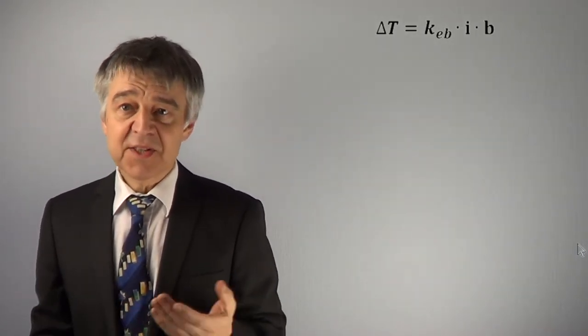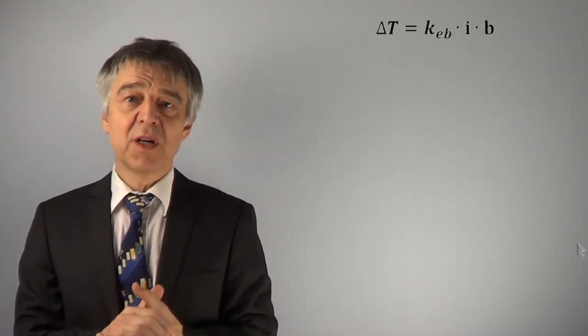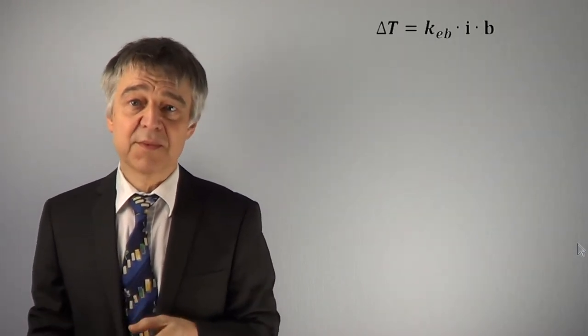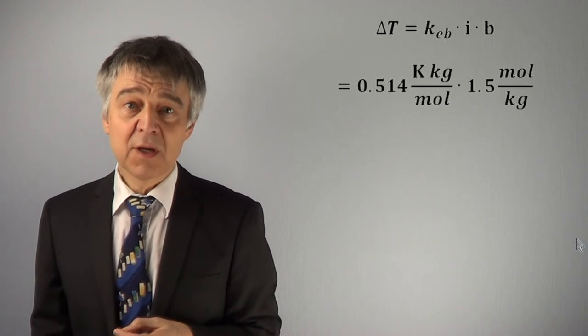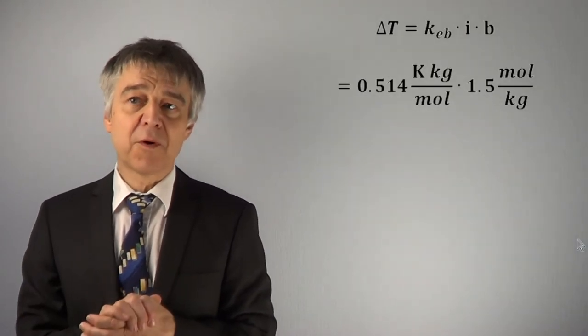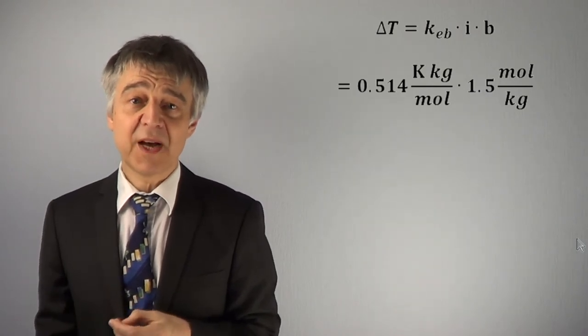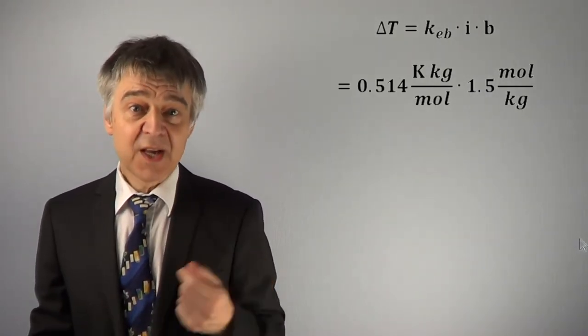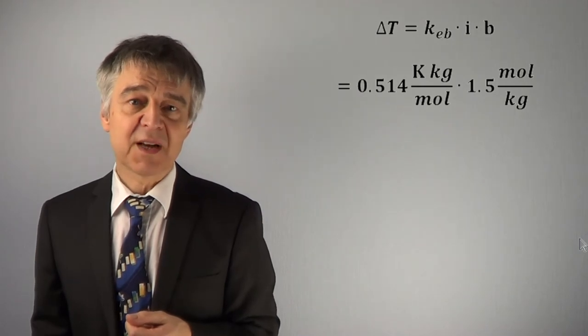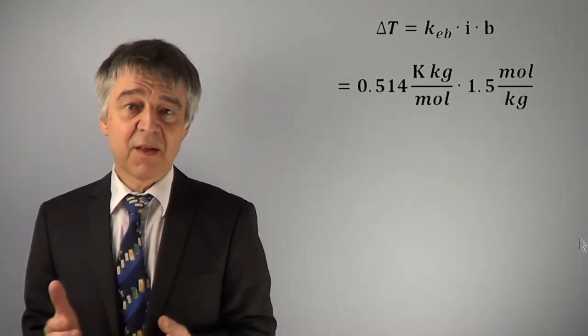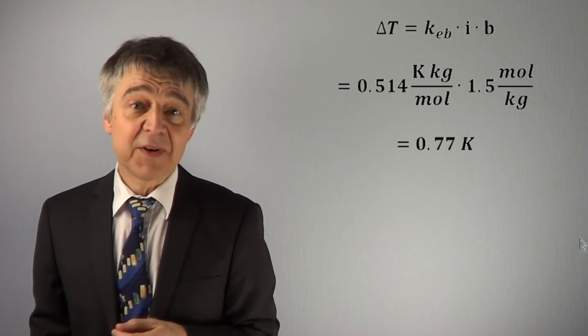Delta T is equal to ebullioscopic constant times osmolality. 0.514 Kelvin per kg per mole times 1.5 moles per kg equals 0.77 Kelvin. This is the boiling point elevation.